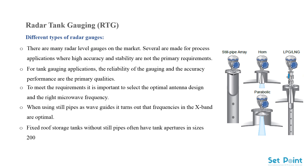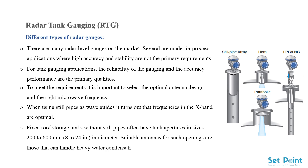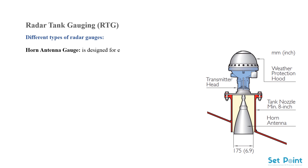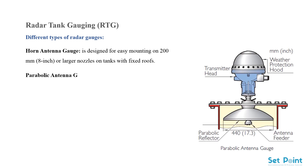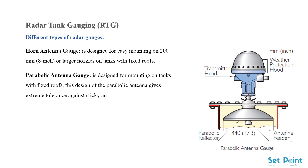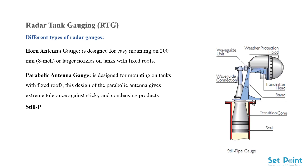Fixed roof storage tanks without still pipes often have tank apertures in sizes 200 to 600 millimeters (8 to 24 inches) in diameter. Suitable antennas for such openings must handle heavy water condensation and dirt buildup. The horn antenna gauge is designed for easy mounting on 200 mm (8 inch) or larger nozzles on fixed roof tanks. The parabolic antenna gauge is also designed for fixed roof tanks and offers extreme tolerance against sticky and condensing products.